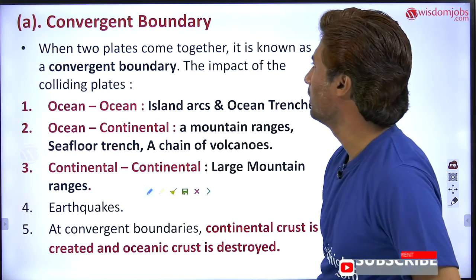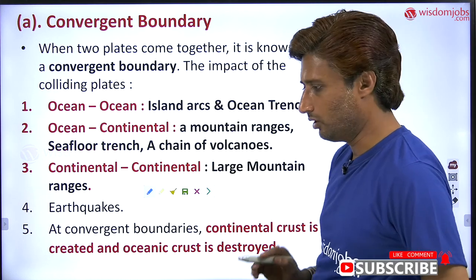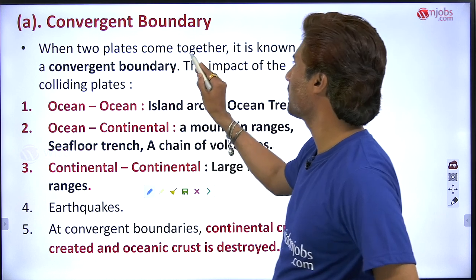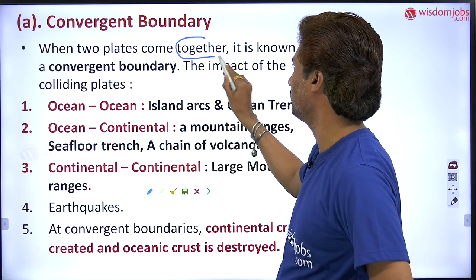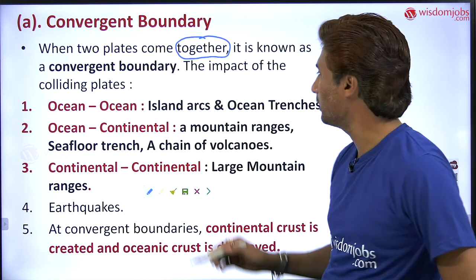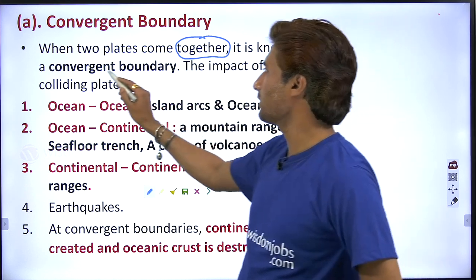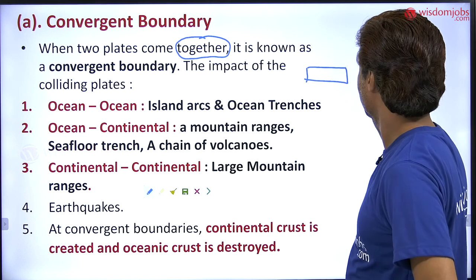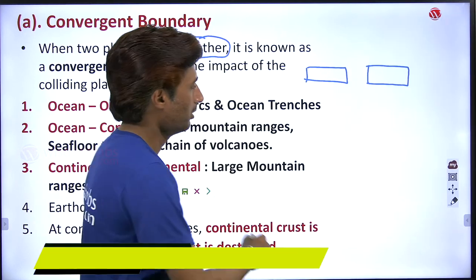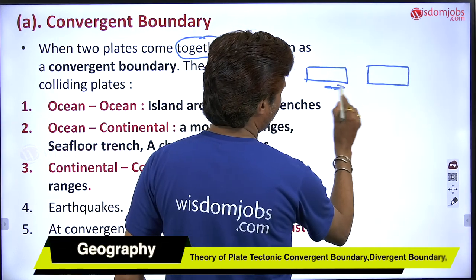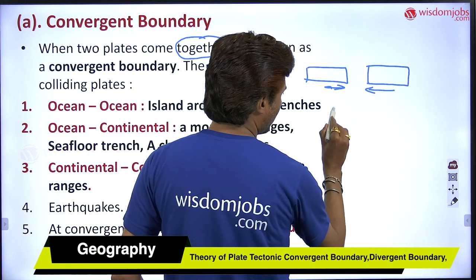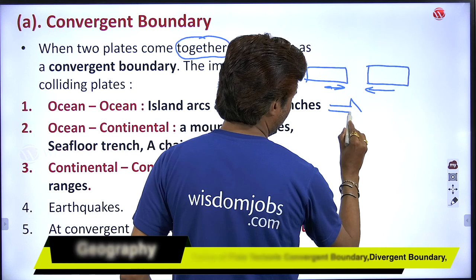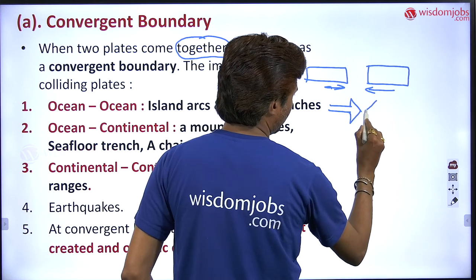The first part — convergent boundary. What is a convergent boundary? When two plates come together, it is known as a convergent boundary. One plate and another plate, both coming together in this way — they are converging. This plate is converging with this plate.